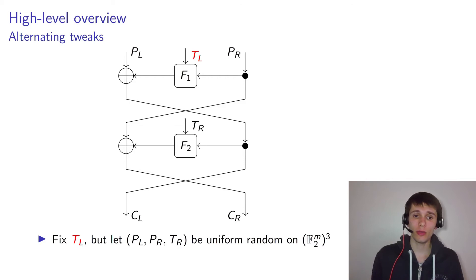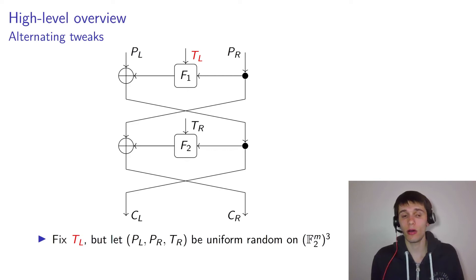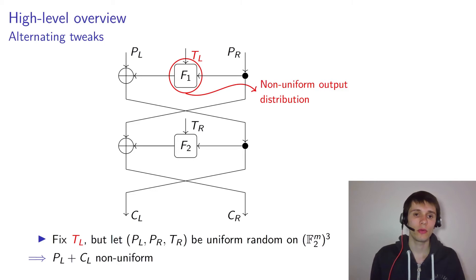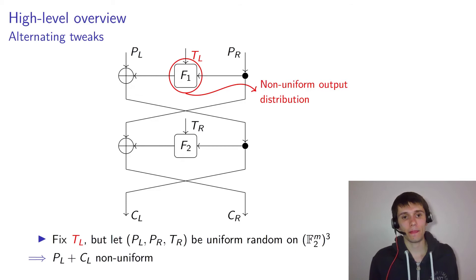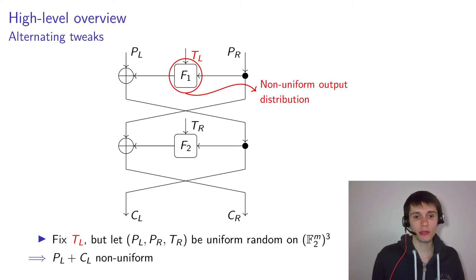The idea behind the attacks is that we can fix half of the tweak — say, the left half. Then F1 is a pretty small function because it only operates on half the domain size, which is typically small for format-preserving encryption. Because of what I've just explained, the output of F1 will be pretty non-uniform.